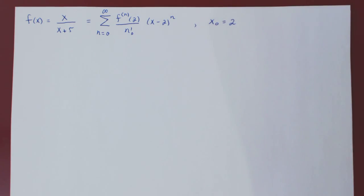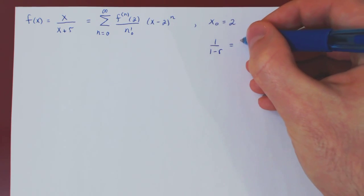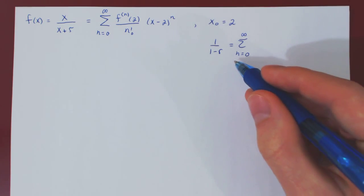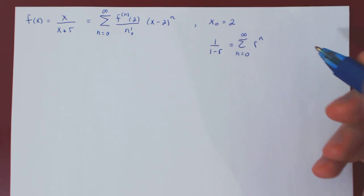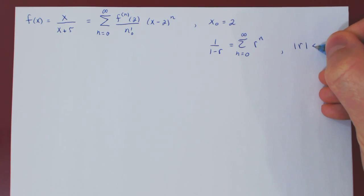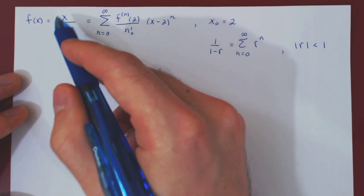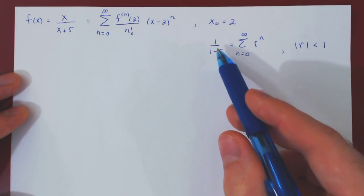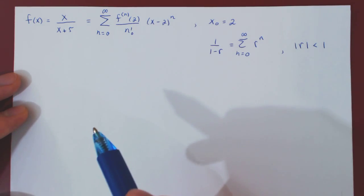Because if you recall, we know that the expression 1 over 1 minus r is equal to, as an infinite series, the sum when n goes from 0 to infinity of simply r to the n. The equality, of course, is only valid if the absolute value of r is strictly less than 1.